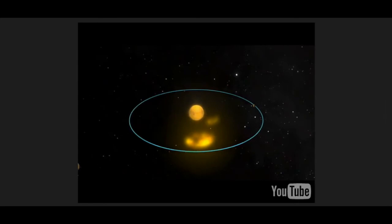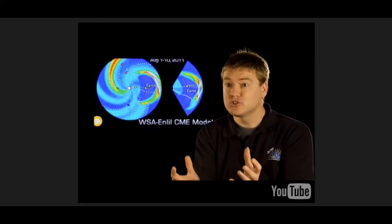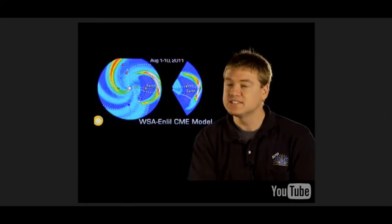Solar flares and CMEs do not always hit Earth — they happen all over the Sun, and their direction depends on where they originate. Some are shot off to the side and miss us completely, going up, left, or like a curve ball that seems to come straight for us and then misses us entirely.